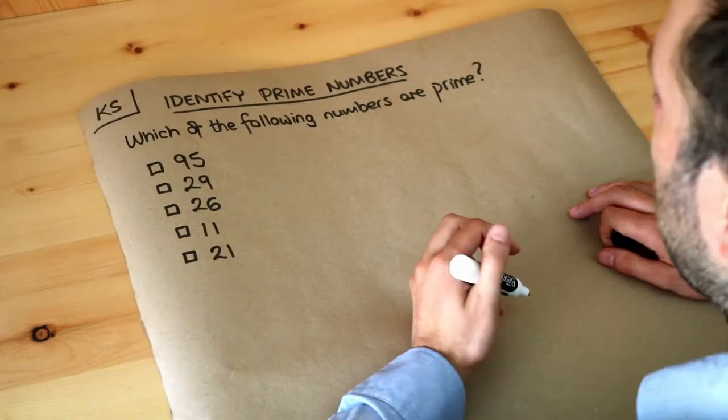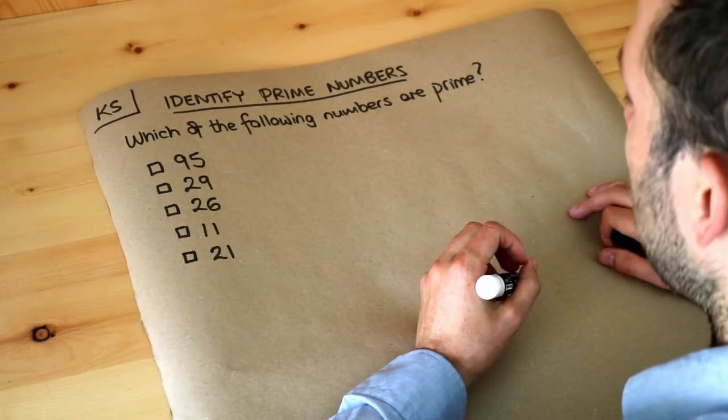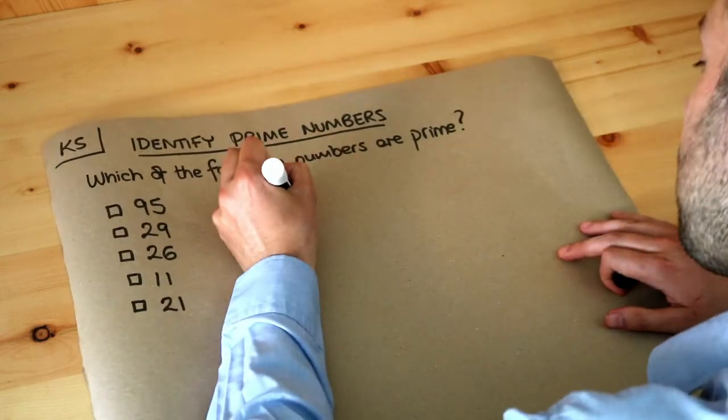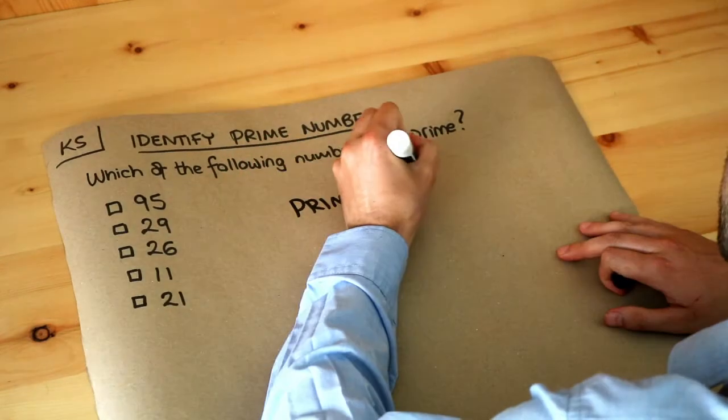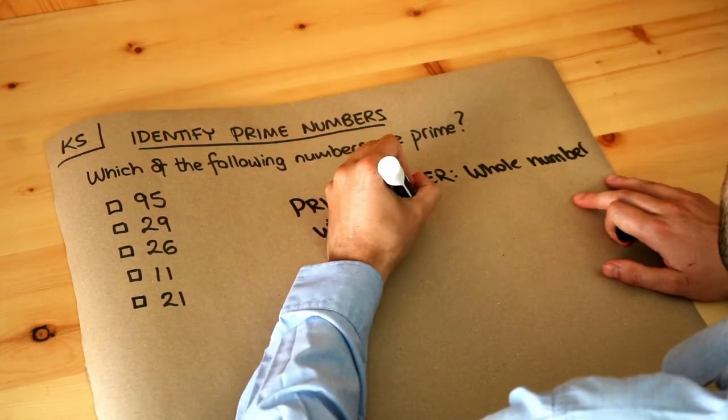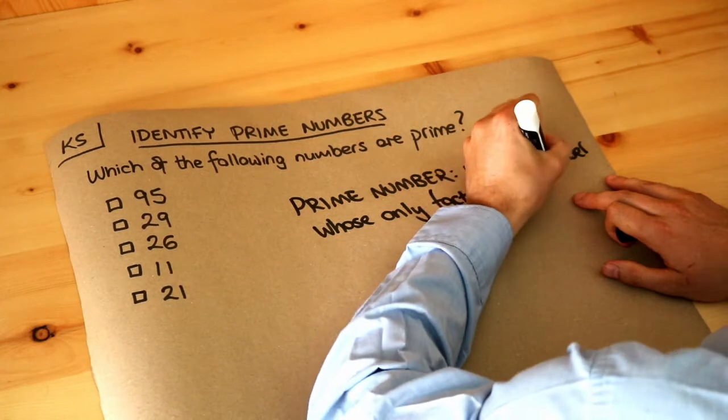We've got a list of numbers here and we want to work out which of those numbers are prime. Let's think about what the definition of a prime number is. A prime number is a whole number whose only factors are one and itself.